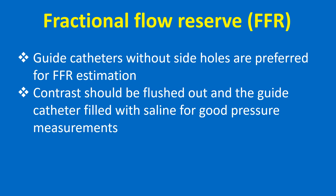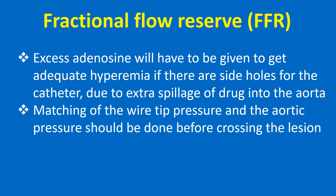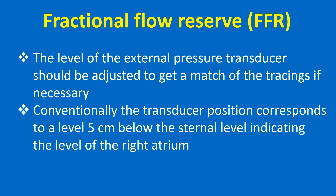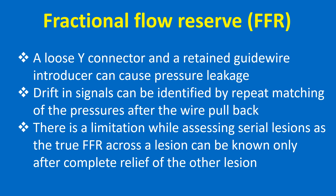Guide catheters without side holes are preferred for FFR estimation. Contrast should be flushed out and the guide catheter filled with saline for good pressure measurements. Excess adenosine will have to be given to get adequate hyperemia if there are side holes in the catheter due to extra spillage of drug into the aorta. Matching of the wire tip pressure and the aortic pressure should be done before crossing the lesion. The level of the external pressure transducer should be adjusted to get a match of the tracings if necessary. Conventionally, the transducer position corresponds to a level 5 cm below the sternal level, indicating the level of the right atrium. A loose Y-connector and a retained guide wire introducer can cause pressure leakage. Drift in signals can be identified by repeat matching of pressures after wire pull-back.